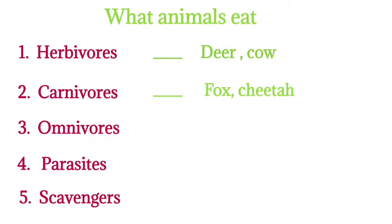Next, omnivores. Animals that eat both plants as well as the flesh of other animals. Examples: rat, chimpanzee, etc.